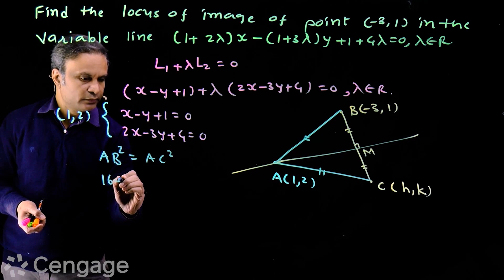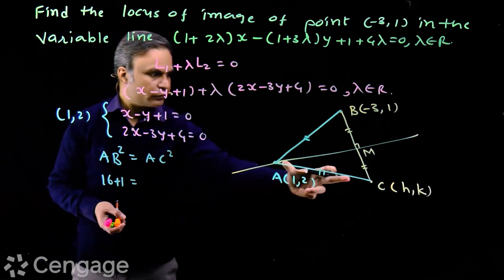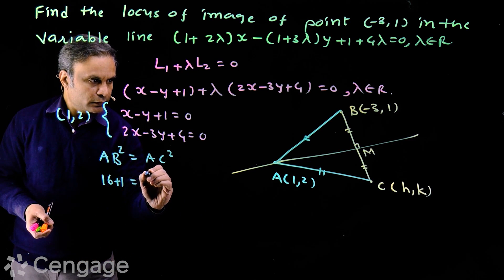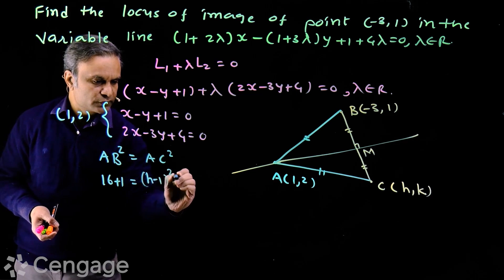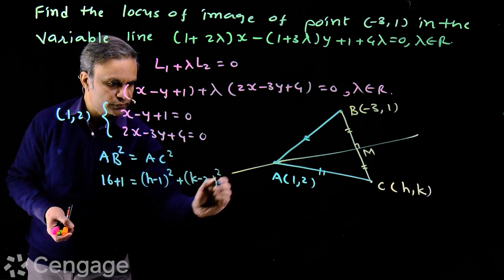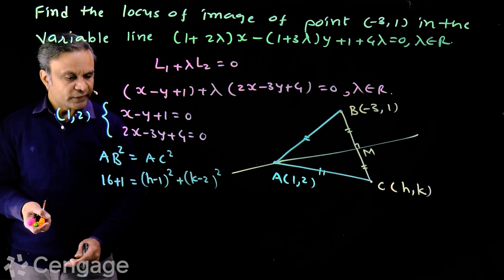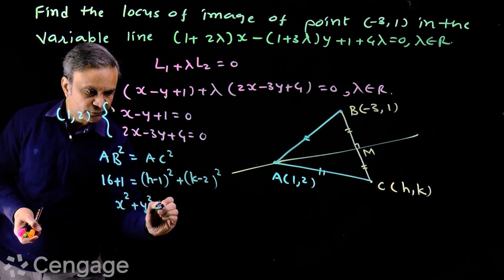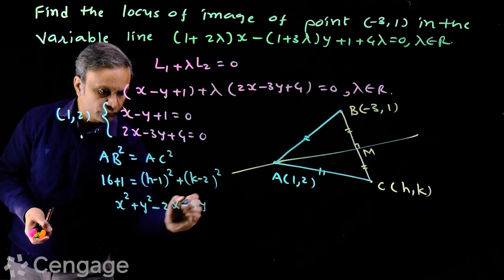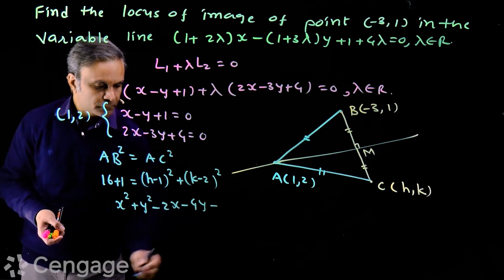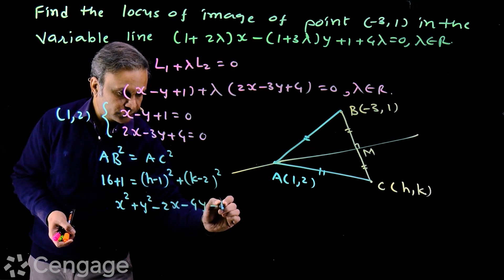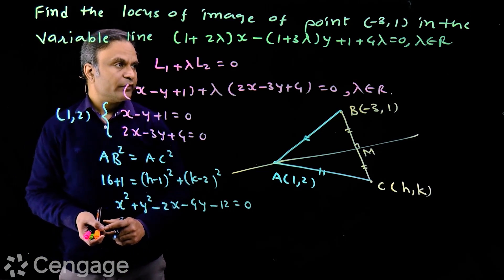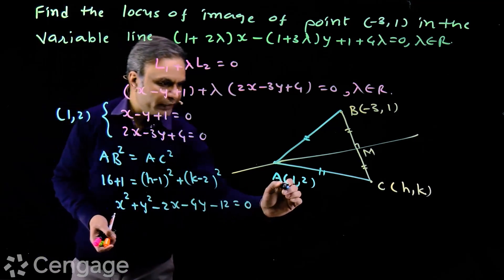Square of this distance is 16 + 1, and square of this distance is (h - 1)² + (k - 2)². Simplify and replace h by x, k by y. We have equation of locus as x² + y² - 2x - 4y - 12 = 0. This is equation of locus of image in variable straight line passing through point (1, 2).